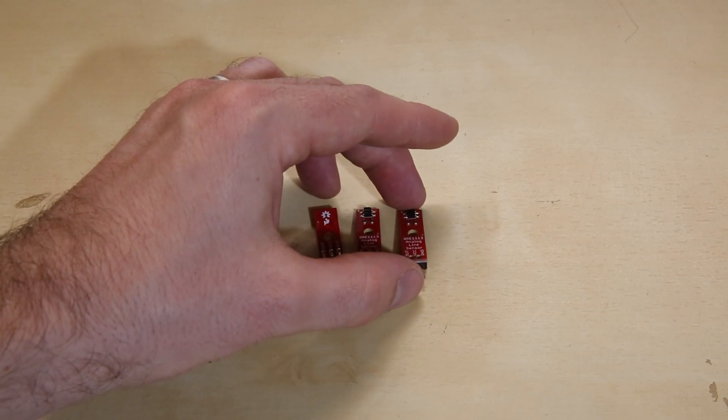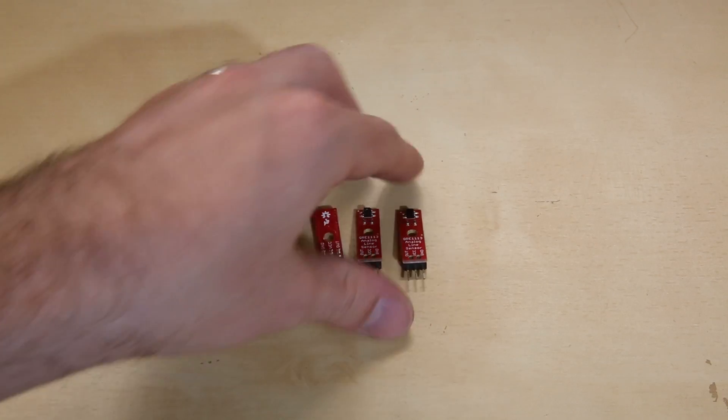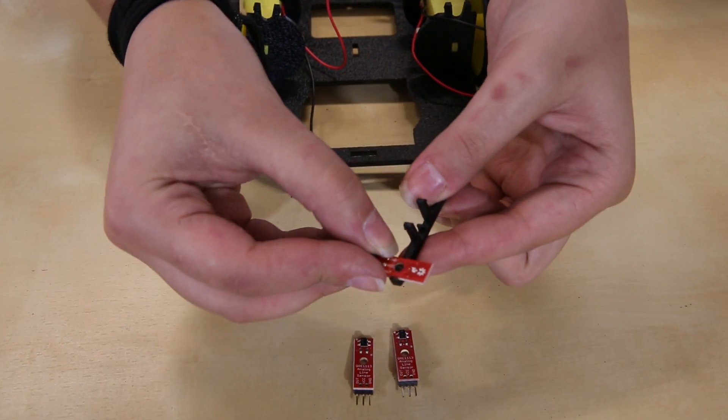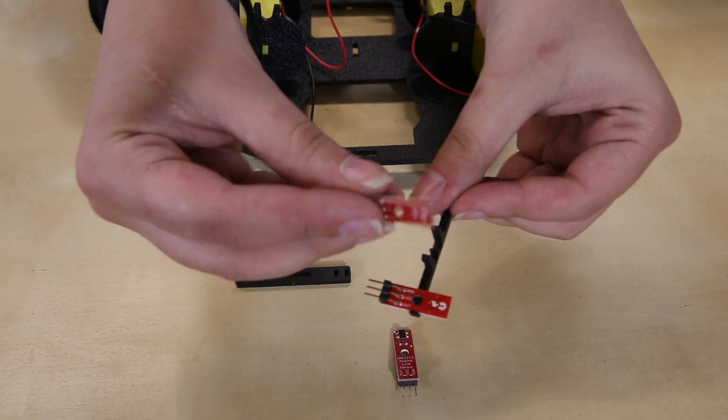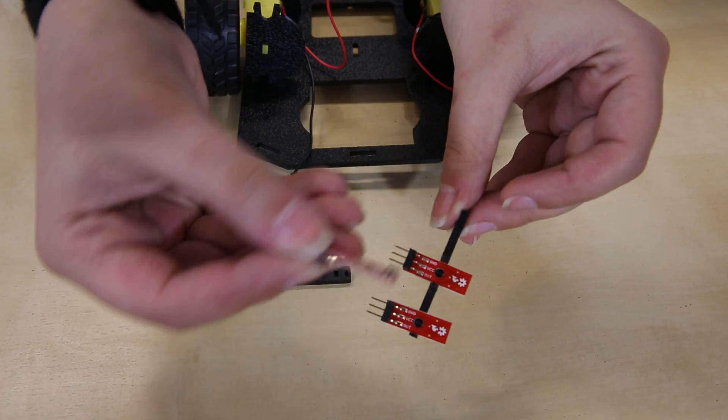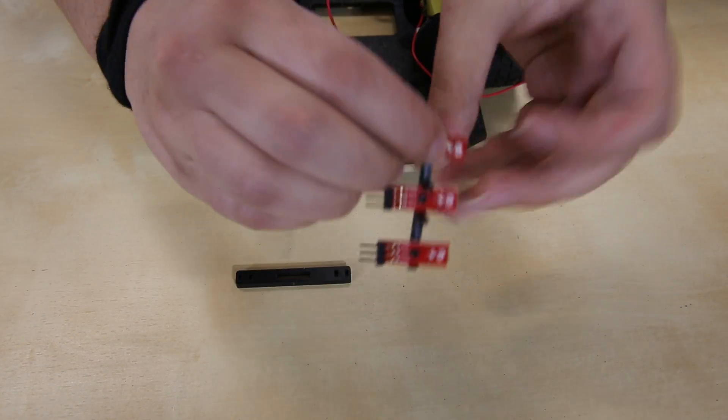Next, we're going to take our line following boards, the three of them, if you have the RedBot or the SIK for RedBot or you just happen to buy these on your own. We're going to take the mount and we're just going to place those in, put the board on top of it and snap that into the base plate.